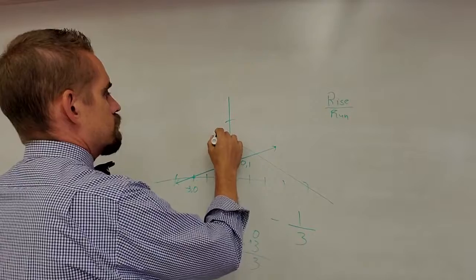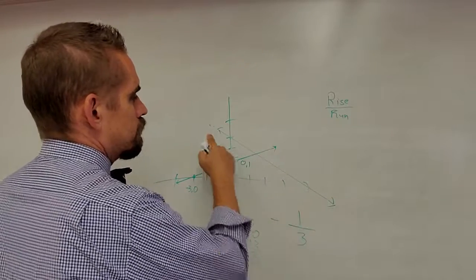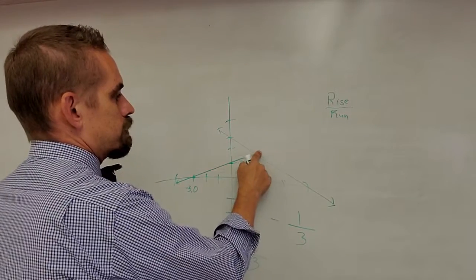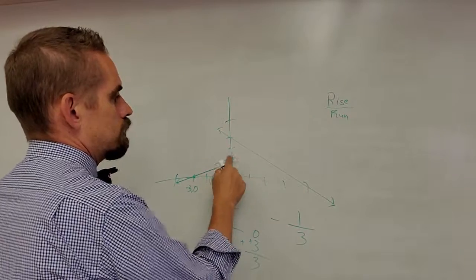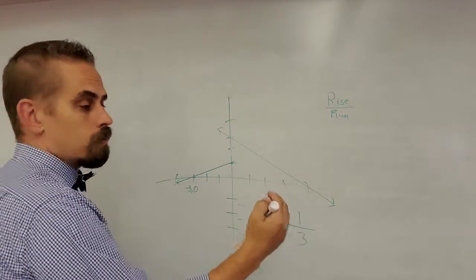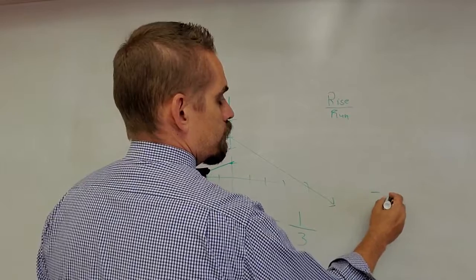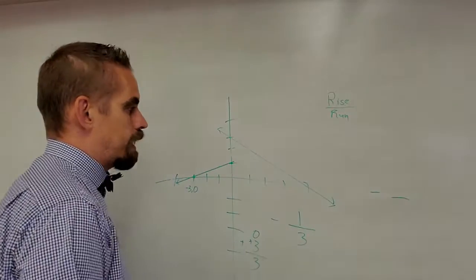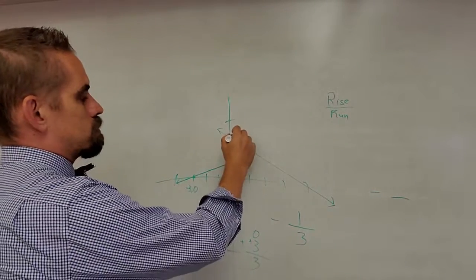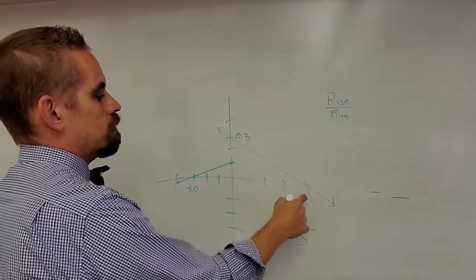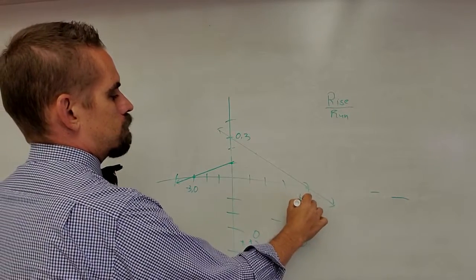let's say we see this line. I'll erase this so as not to get confused. I see it's going downhill. I automatically know it's a negative slope. Now, point here is zero, three. My point here is four, zero.